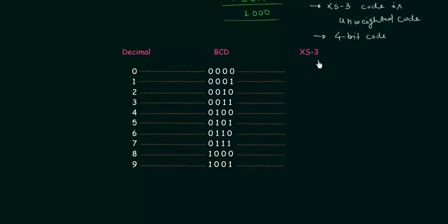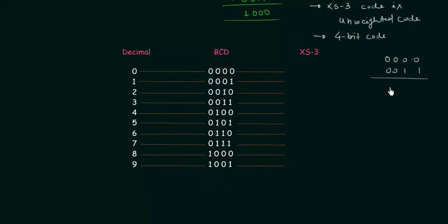Now we will move to the table. We will try to obtain XS3 code for decimal digits 0 to 9. I have already completed the BCD column. Now we have to complete the XS3 column. 0 in decimal is represented as 0000 in BCD. To obtain XS3 we add 0011, that is 3. So 0000 plus 0011 gives us 0011. Zero plus 3 is 3, so XS3 for 0 is 0011.